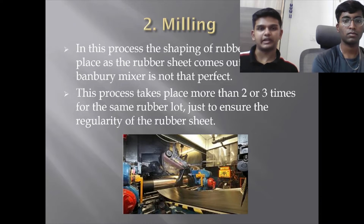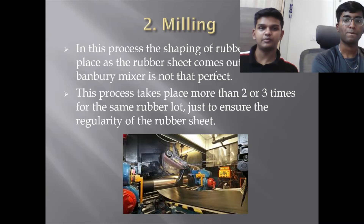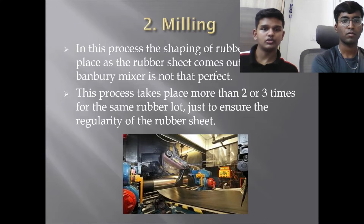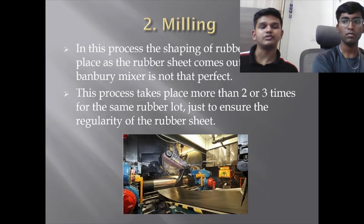The second process is milling, where the shaping of the rubber takes place. As the rubber sheet comes out from the Banbury mixer it is not perfectly uniform, so the process is repeated two or three times for the same rubber batch to ensure the regularity of the rubber sheet.